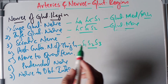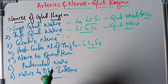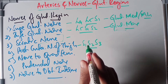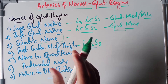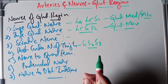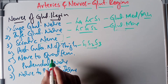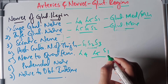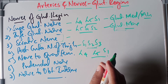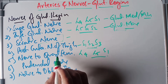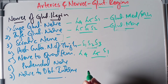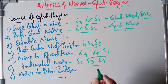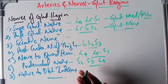The posterior cutaneous nerve of the thigh arises from S1, S2, and S3 of the sacral plexus and supplies the skin of the posterior two-thirds of the scrotum or labium majus, and also the inferior quadrant of the gluteal region. The nerve to quadratus femoris arises from L4, L5, and S1 and supplies the inferior gemellus and quadratus femoris, with a small branch to the hip joint. The pudendal nerve arises from S2, S3, and S4 and enters through the pudendal canal.